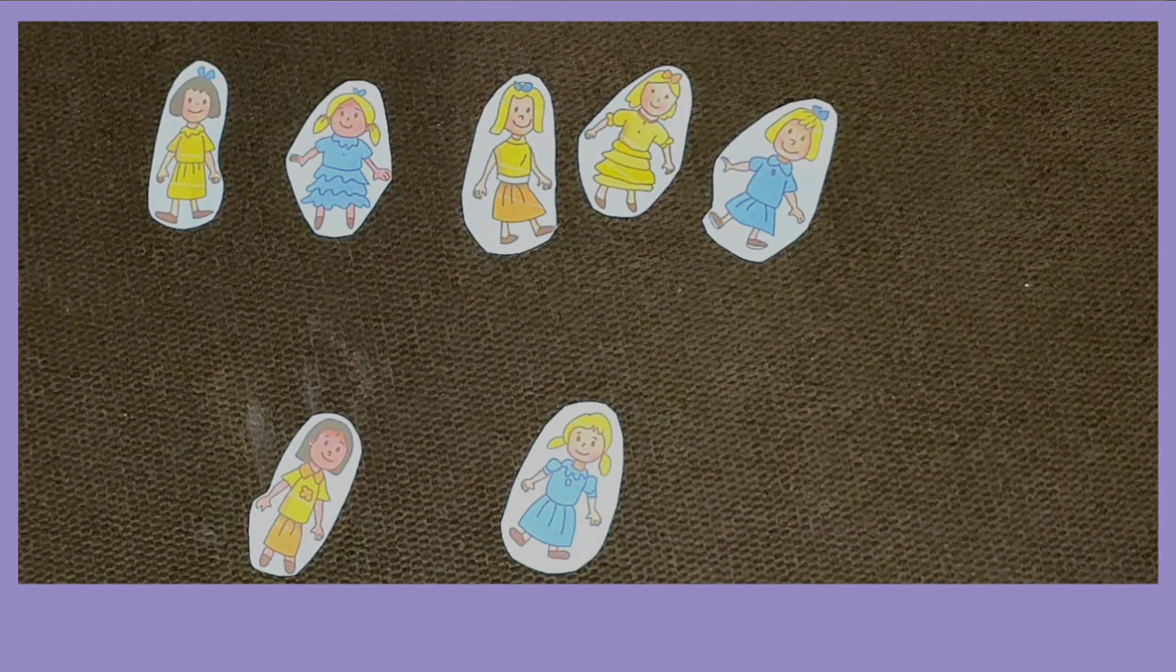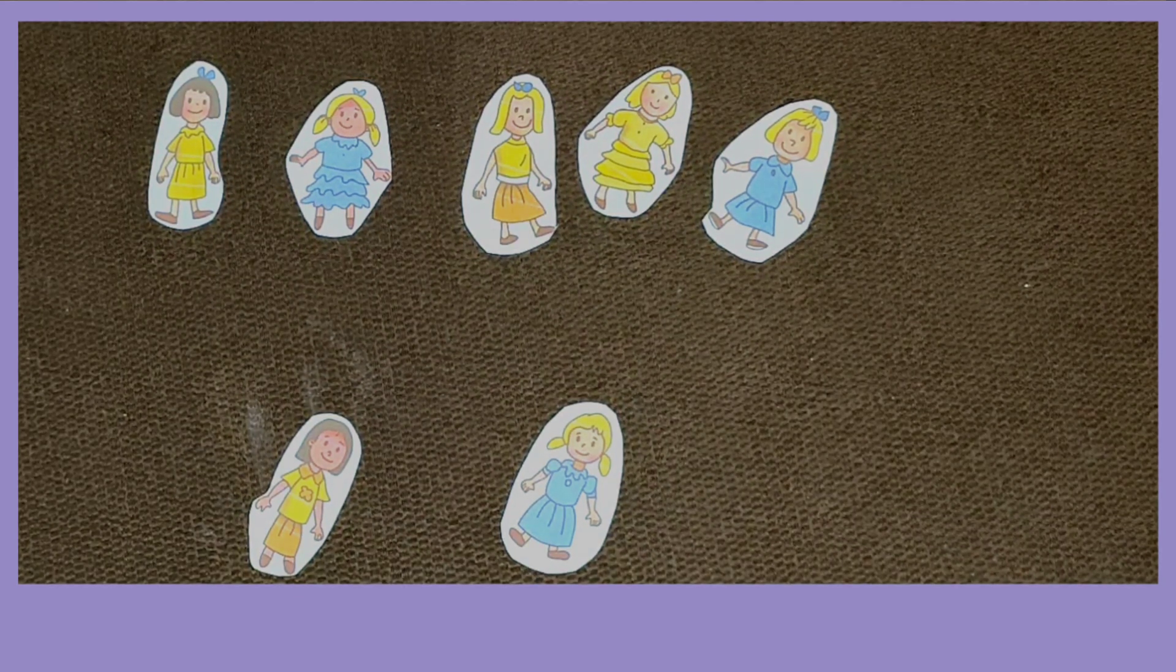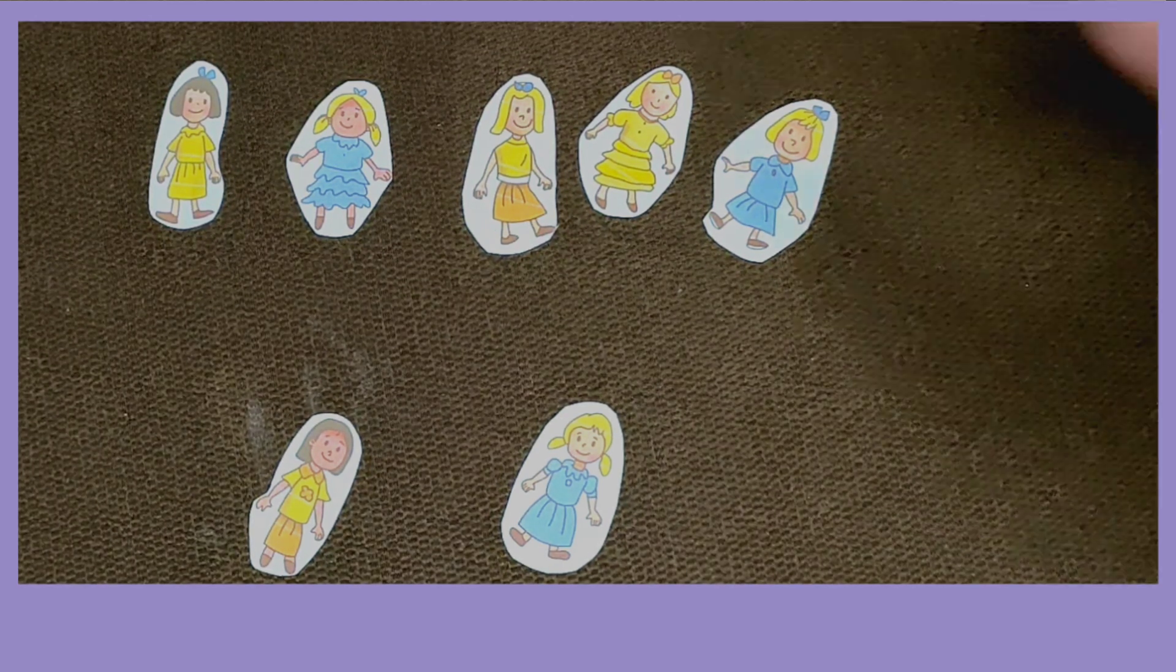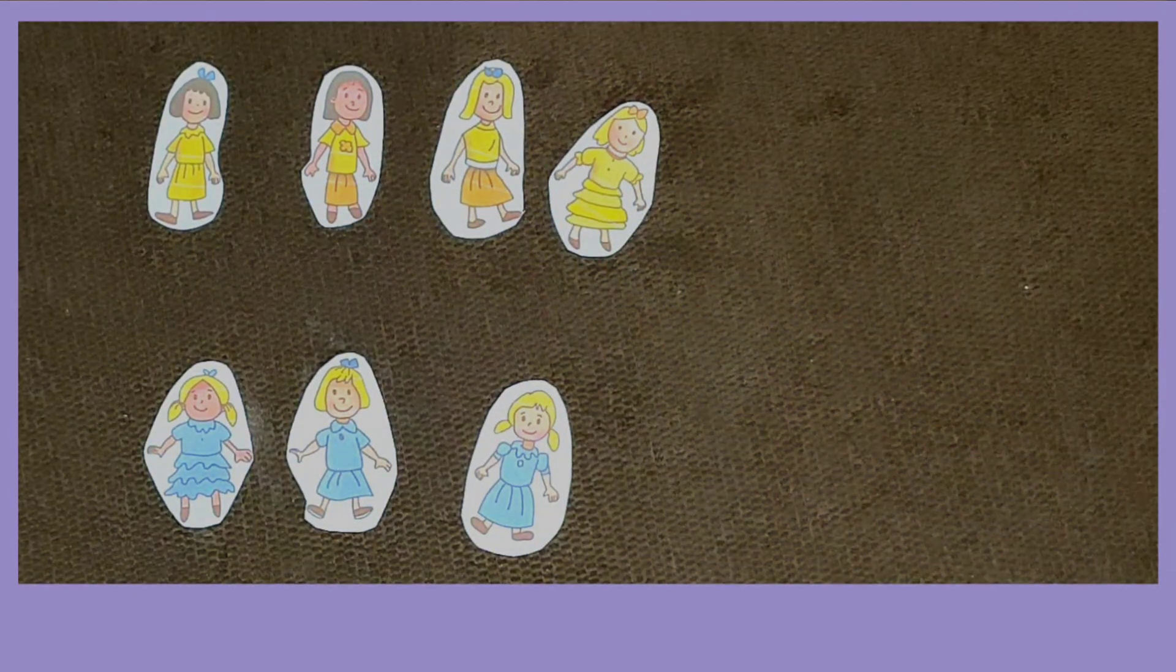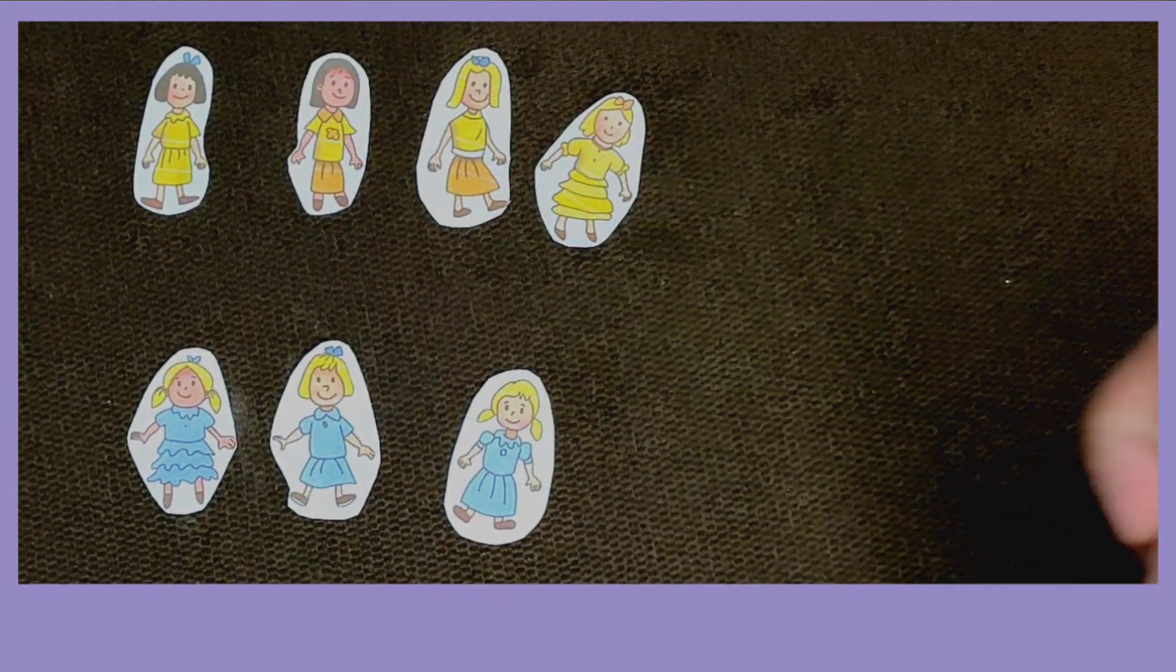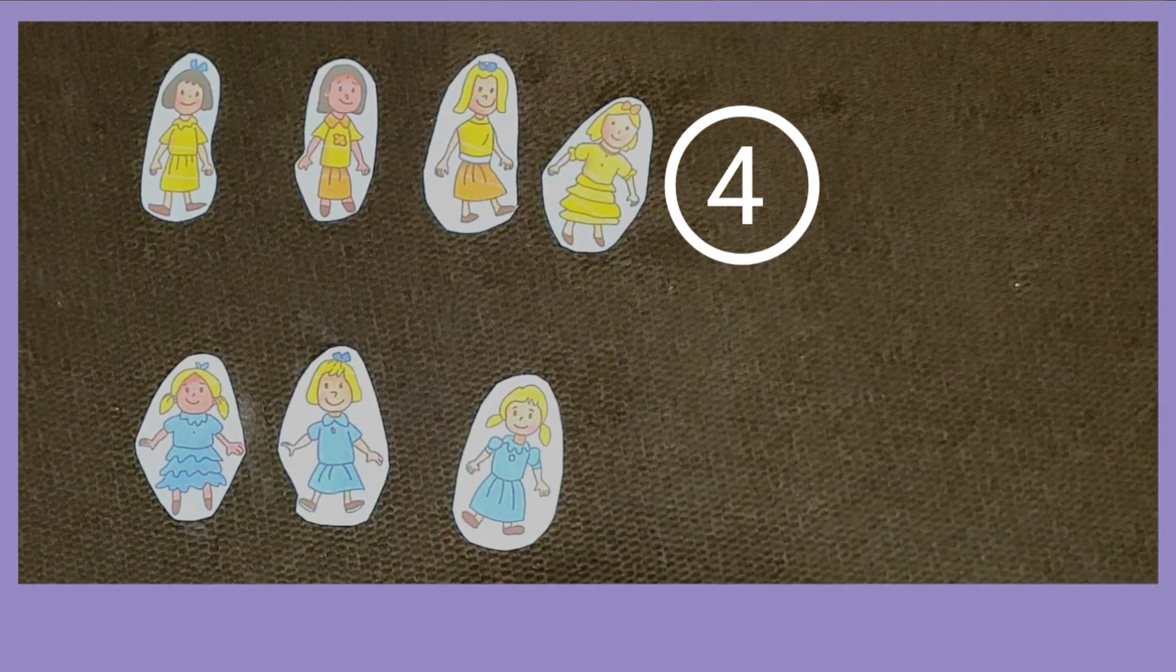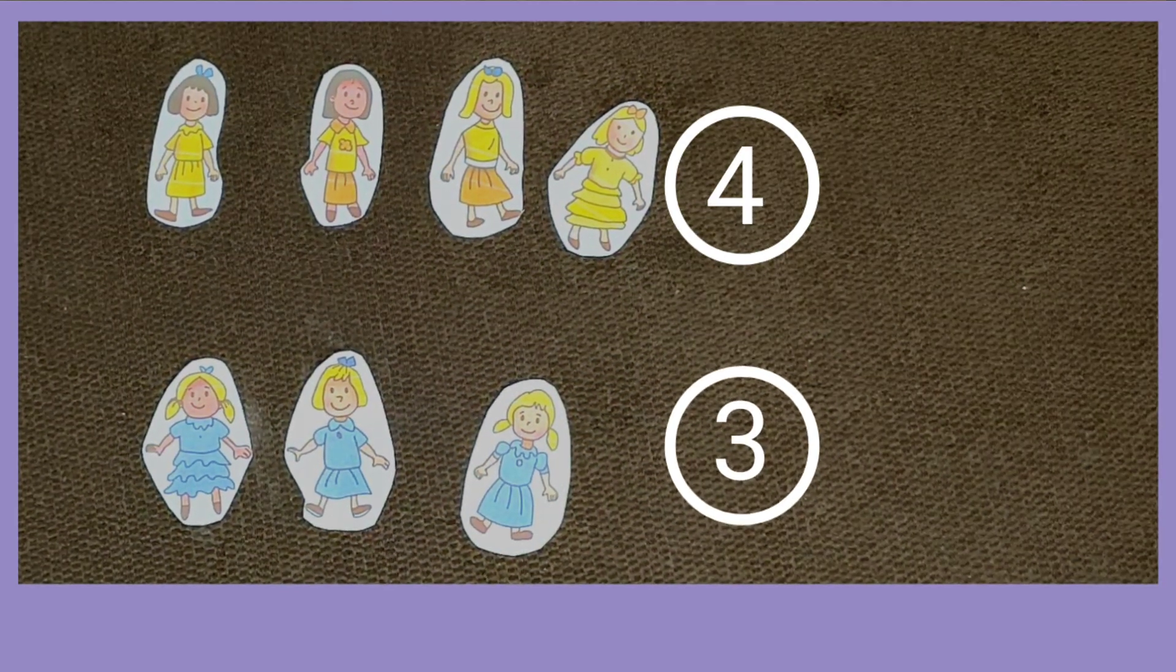Now, let's try to sort these paper dolls. How about we do it by the color of what they are wearing. So, here we have one, two, three, four. Four girls are wearing yellow. One, two, three. Three are wearing blue.